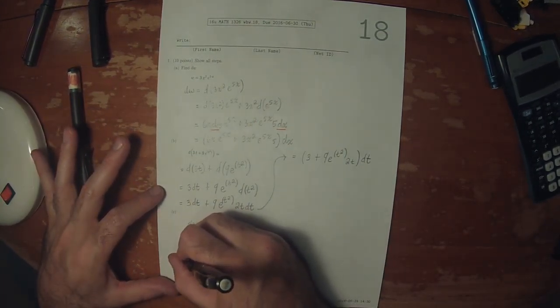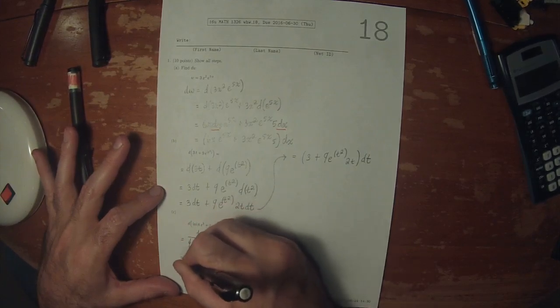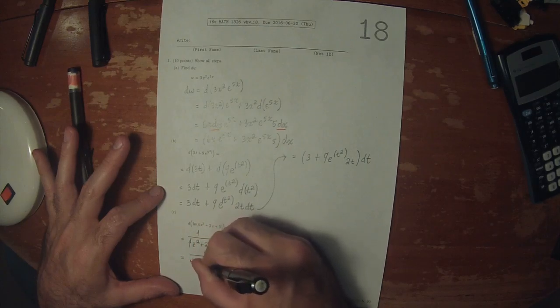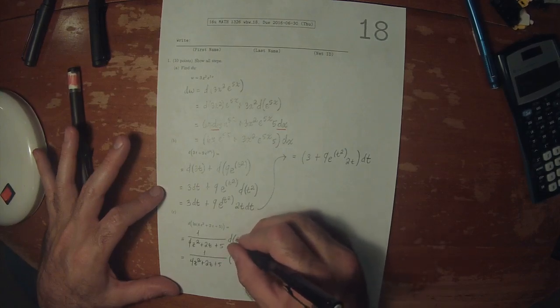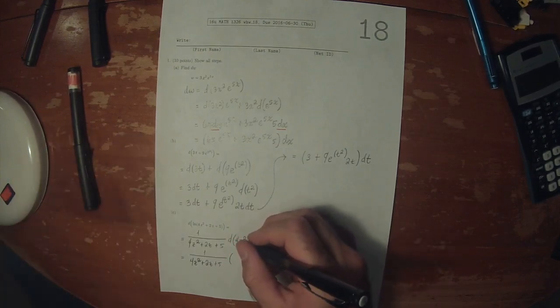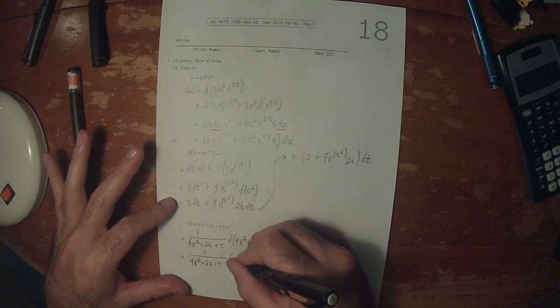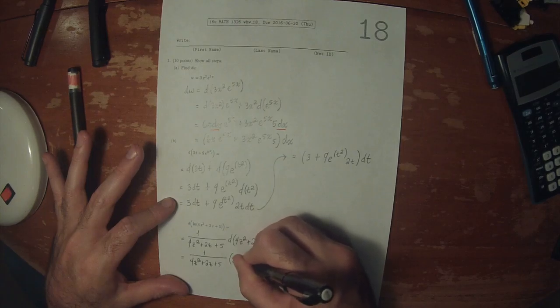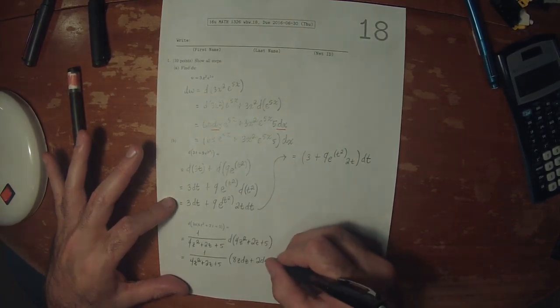So that would be 1 over 4z squared plus 2z plus 5, multiplied by 8z dz plus 2 dz and then plus 0.